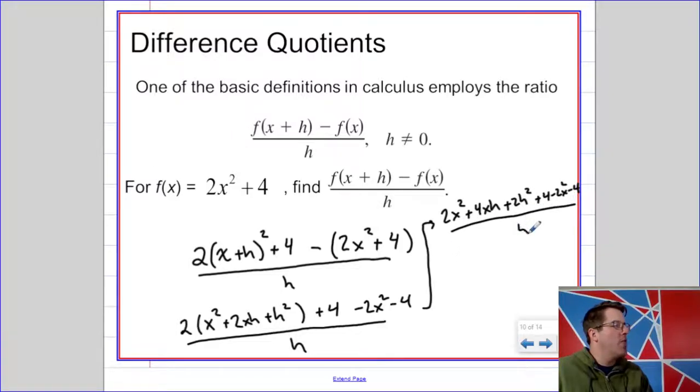So once again, we're going to have some canceling action here. The 2x squareds are going to cancel each other out, and the 4 and the negative 4 are going to cancel each other out. So we're left with 4xh plus 2h squared over h or a final answer of 4x plus 2h.